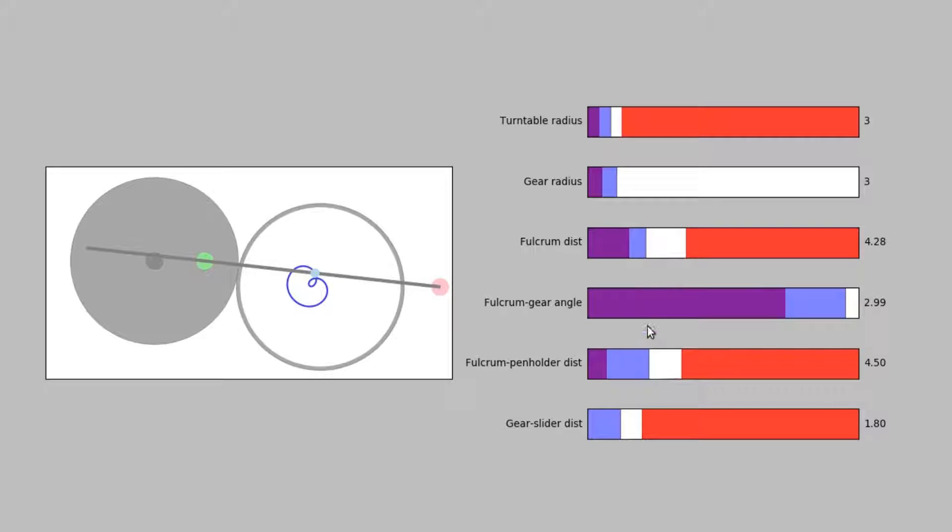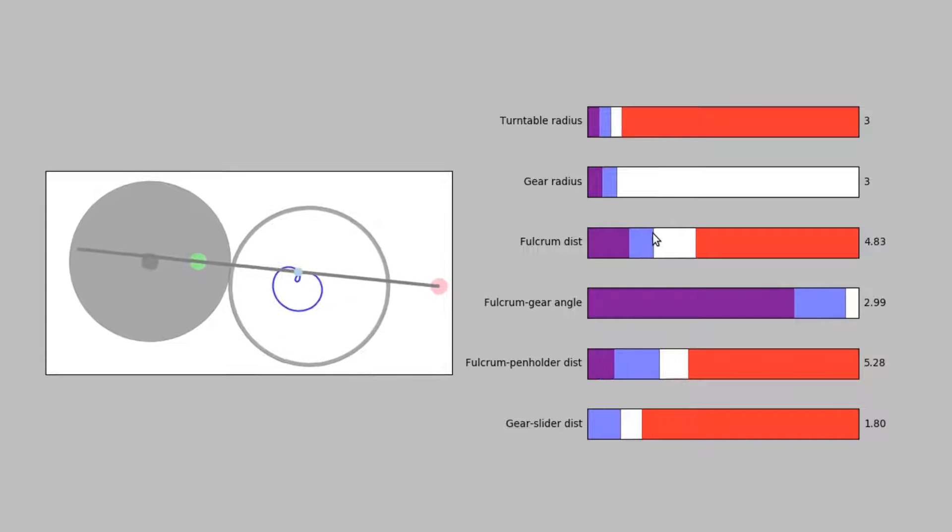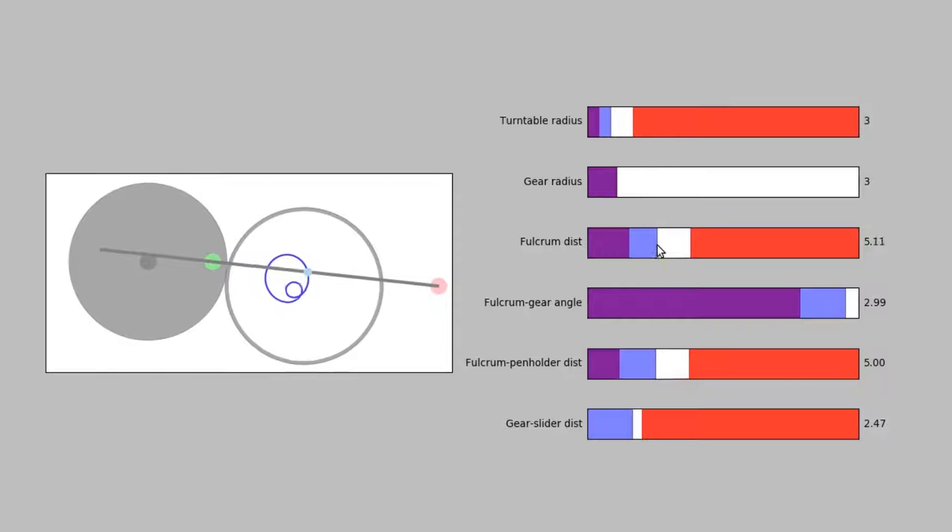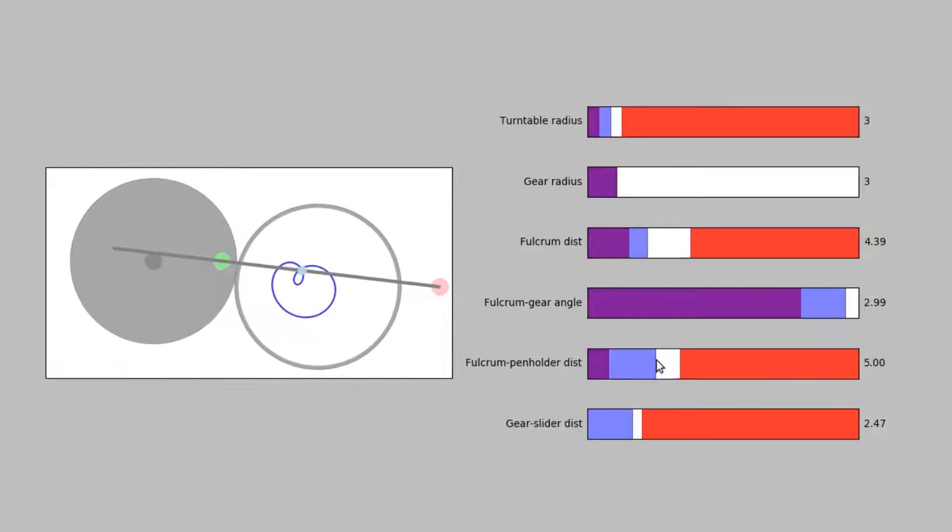Some sliders influence several features of the drawing at the same time. Conversely, a specific change can be controlled by several sliders. Ideally, the user would be able to define her own specifications and not those imposed by the parametrization of the machine.